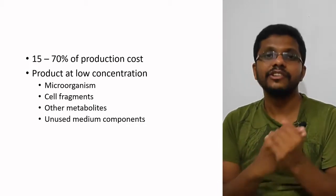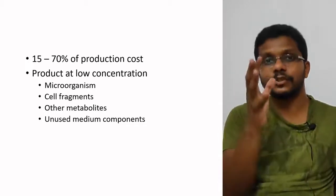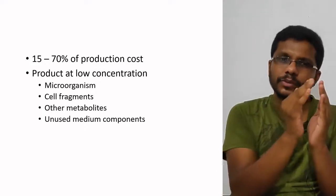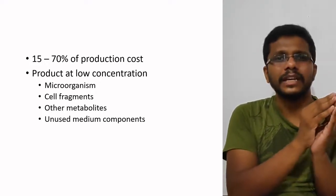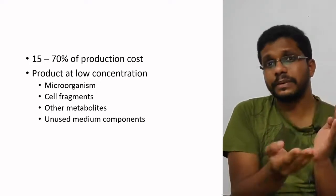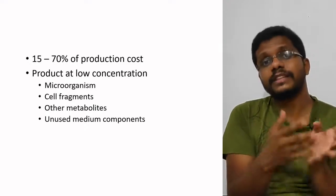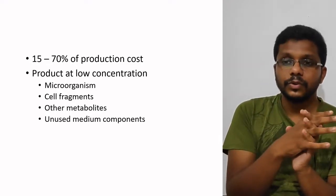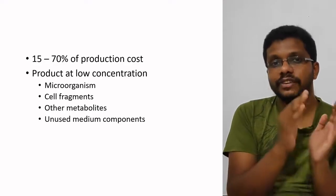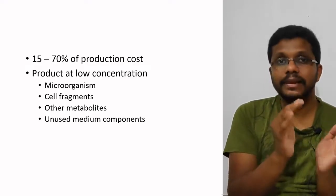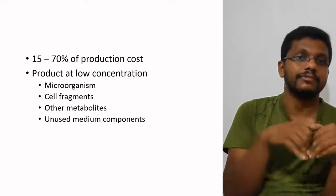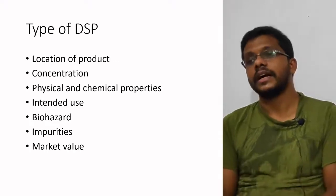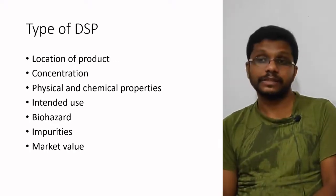After fermentation, we are getting our product in this huge mixture — a mixture of many things. Some metabolites will be present in very small quantities, like maybe 1% of the volume, while sometimes it will be 30% or 40% of the medium. In downstream processing, we are trying to isolate our product from other components using different downstream strategies.